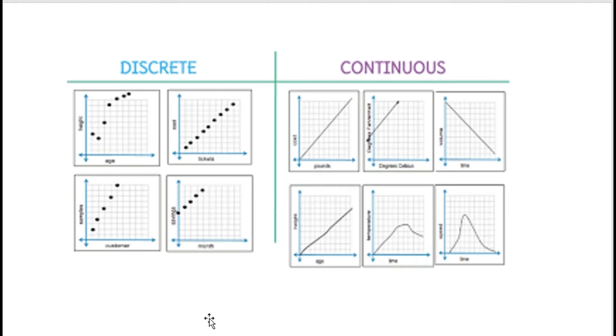These are graphs showing you the discrete terms and the continuous terms. These graphs will show you exactly what the meaning of discrete and continuous is.